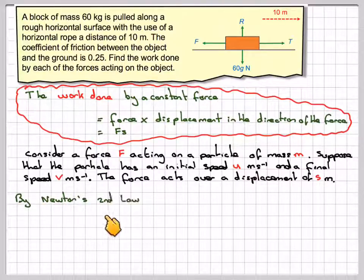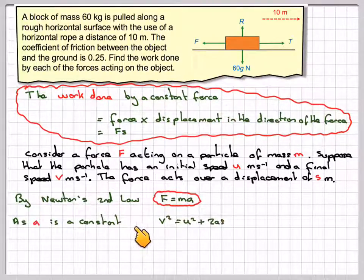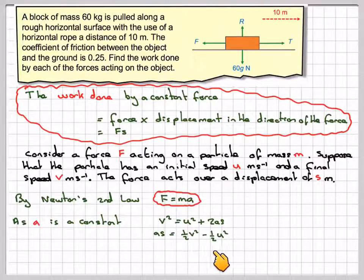So by Newton's second law, we have that F is equal to M A. And as A is a constant, then it obeys these laws of motion. So V squared will be equal to U squared plus 2 A S. If we rearrange this for A S, we get that A S will be a half V squared minus a half U squared.